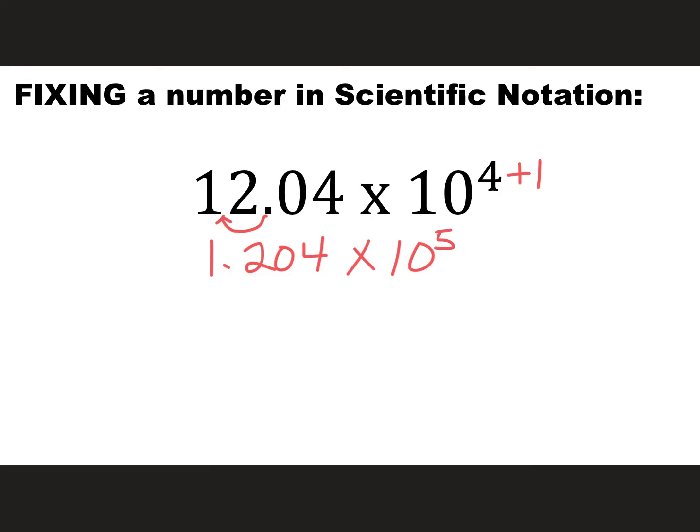And some people might be freaking out going, wait a minute, does that really work? Sure. If I have 12.04 times 10 to the fourth, I'm moving the decimal four times, which gives it two zeros at the end. If I had 1.204 and I need to move it five times, one, two, three, four, five, guess what? I still have two zeros at the end. Those two numbers are the same thing.